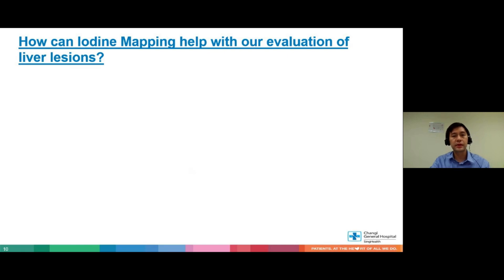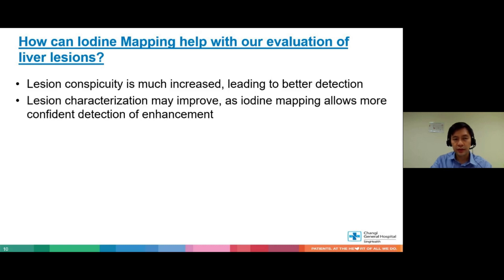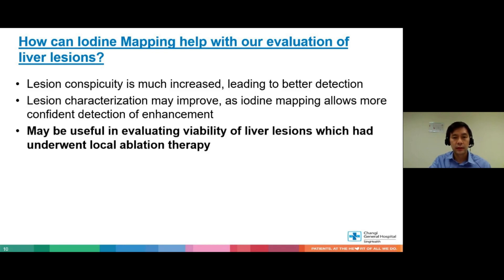So how can iodine mapping help with evaluation of liver lesions? First, lesion conspicuity is much increased, leading to better detection — somewhat similar to using SMI to make lesions more conspicuous. Second, lesion characterization can be improved because iodine mapping allows more confident detection of enhancement. And most importantly, we think it is quite useful in evaluating the viability of liver lesions which underwent local ablation therapy.